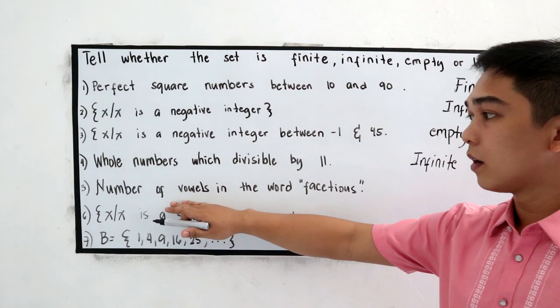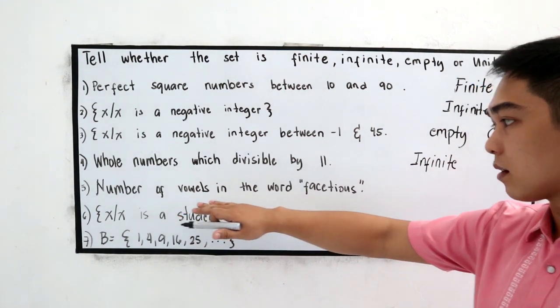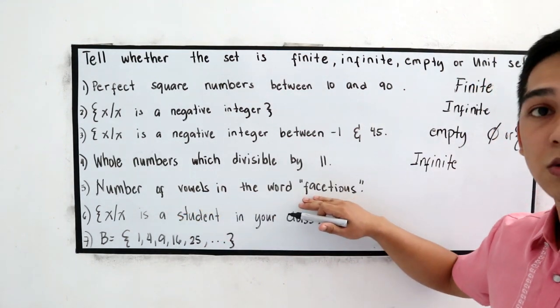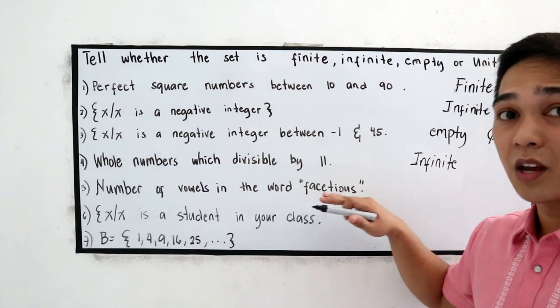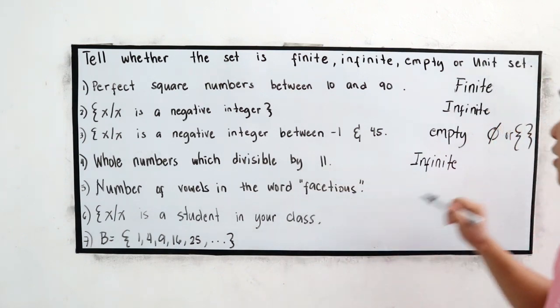Number five. Number of vowels in the word jocetious. Can we count the number of vowels? Yes. So, this is finite.